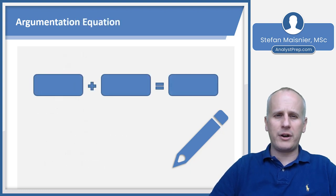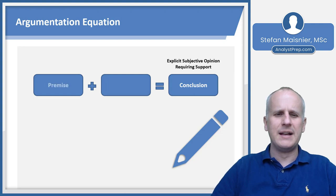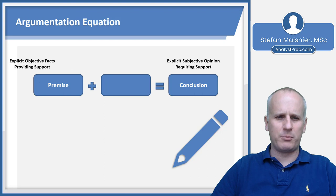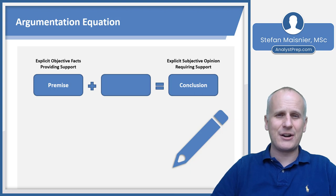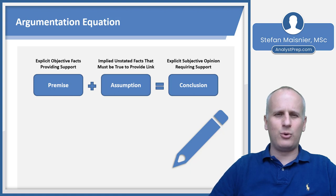All argumentation can be distilled into the argumentation equation, which always leads up to a conclusion — your explicit subjective opinion requiring some sort of support. That support comes in the form of a premise, which is your explicitly stated set of objective facts intended to support that subjective conclusion. Then we have what is known as the assumption: an individual or set of facts that must be true to logically link the premise or premises to the conclusion.